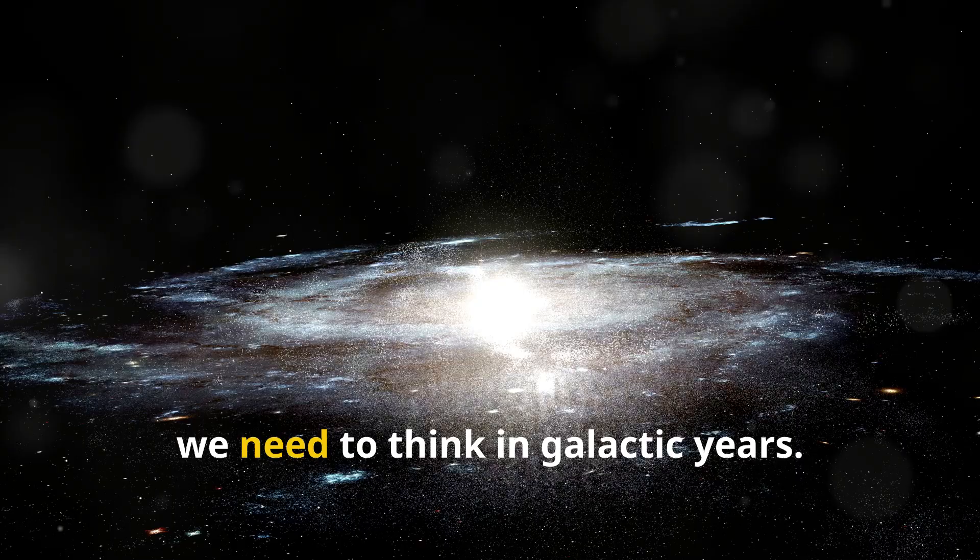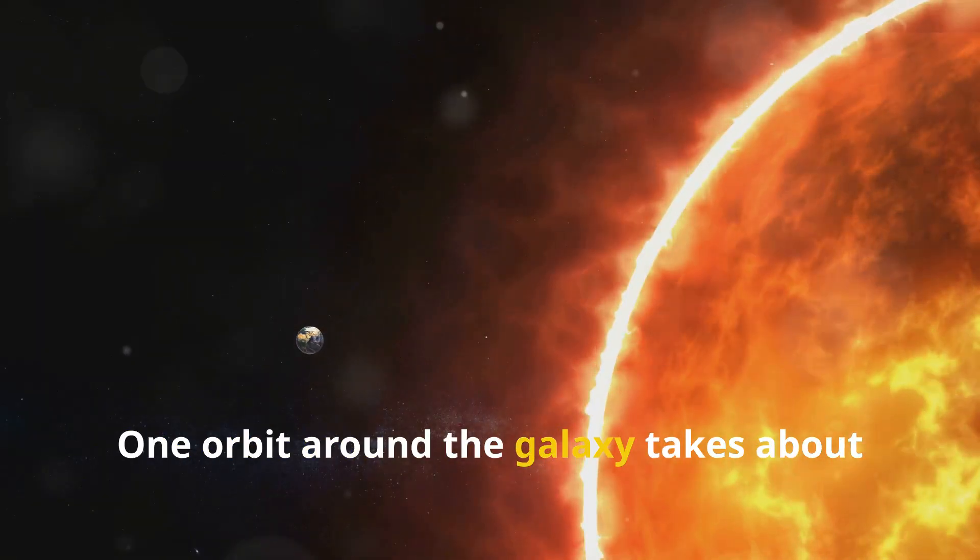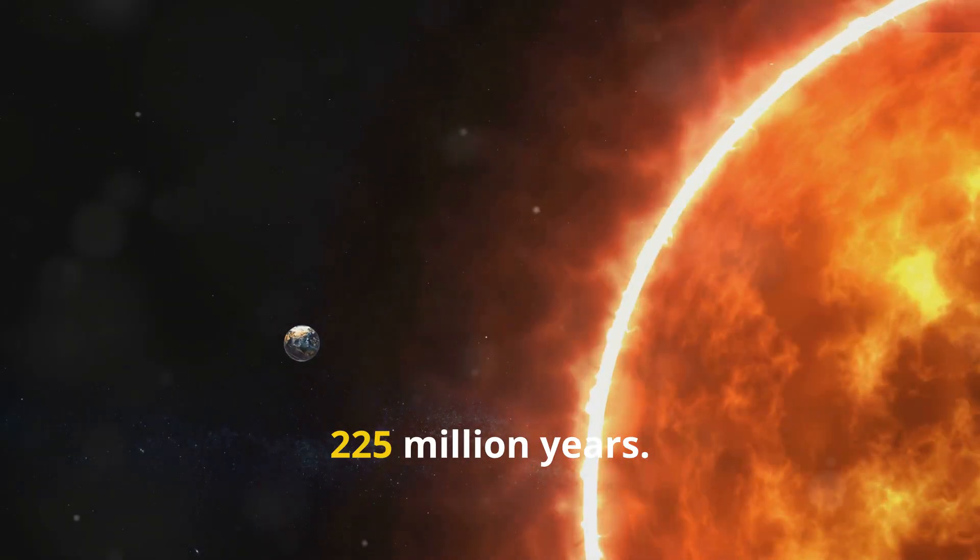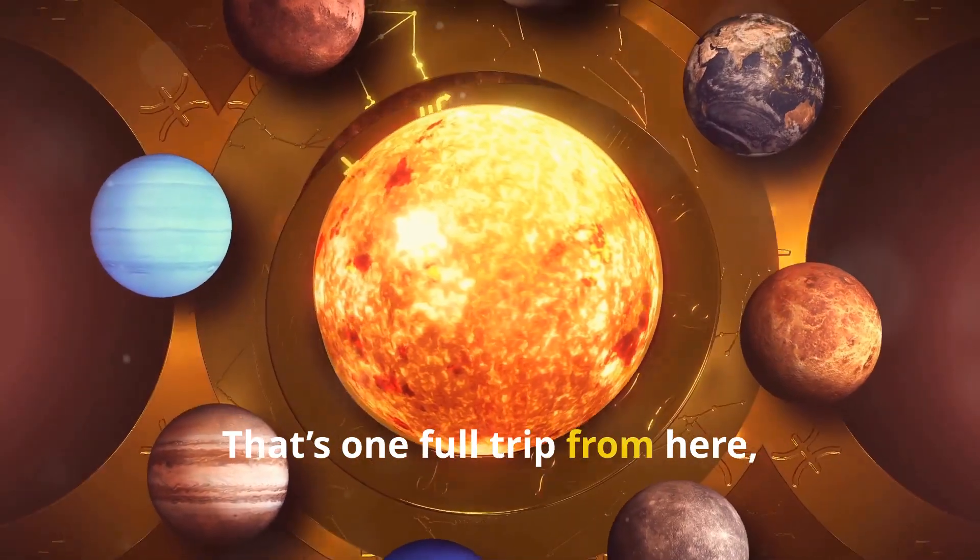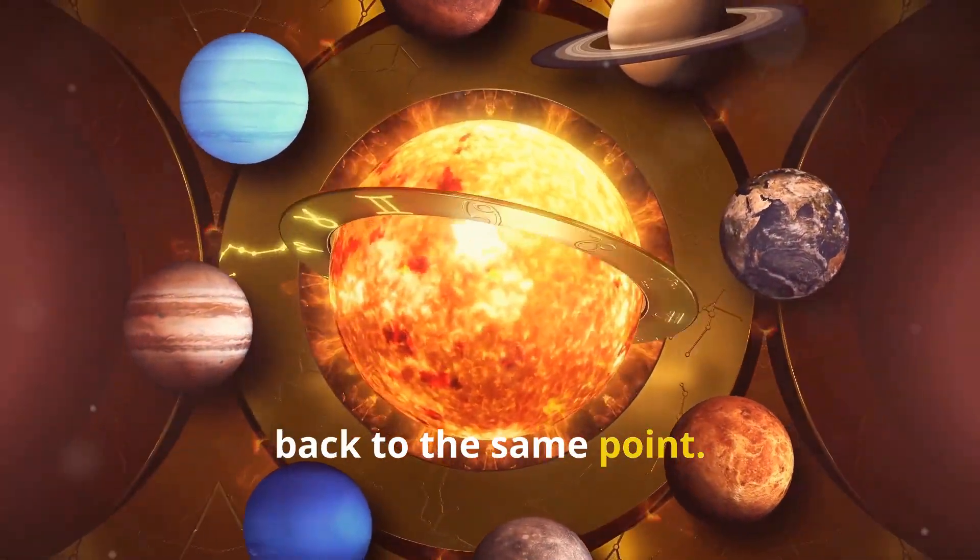To understand this, we need to think in galactic years. One orbit around the galaxy takes about 225 million years. That's one full trip from here, all the way around the Milky Way, back to the same point.